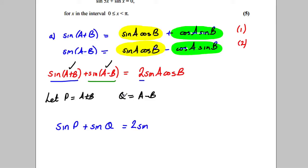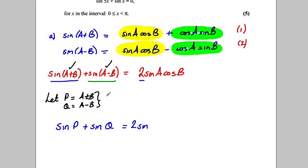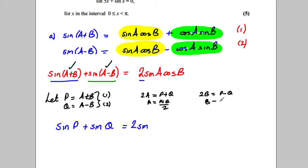Now look at these two: P equals A plus B and Q equals A minus B. If I add these two equations I get 2A equals P plus Q, so A equals (P+Q)/2. And if I subtract them I get 2B equals P minus Q, so B equals (P−Q)/2.